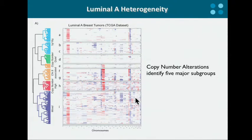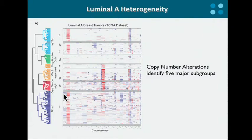We went back to the TCGA dataset and clustered the luminal A tumors according to the copy number levels across the whole genome. Just by eyeballing this heatmap, the diversity is pretty striking. We found five major subgroups, some of which are characterized by low level or no copy number alteration, while others, like this one in red here, are characterized by an abnormally high level of copy number alteration, and especially focal deletions and amplifications.